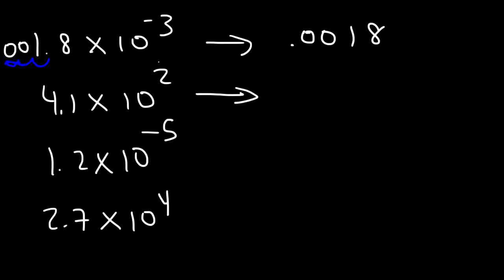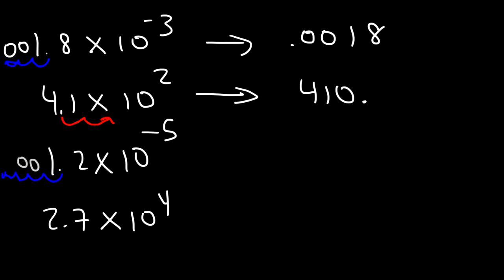For 4.1 times 10 to the 2 — positive exponent means a large number, so move the decimal right two spaces — that gives 410. For 1.2 times 10 to the negative 5 — move it left 5 spaces — that's going to be 0.000012.